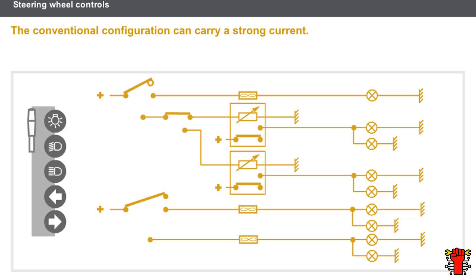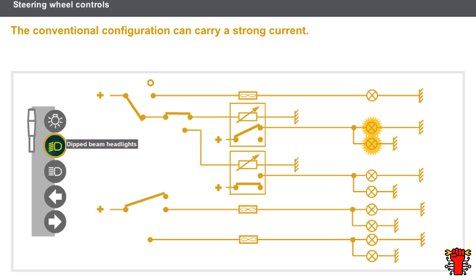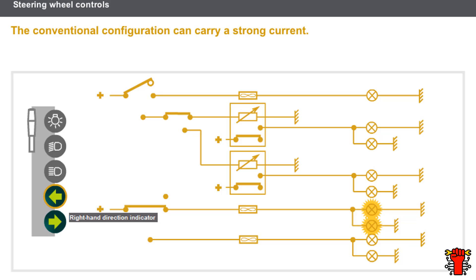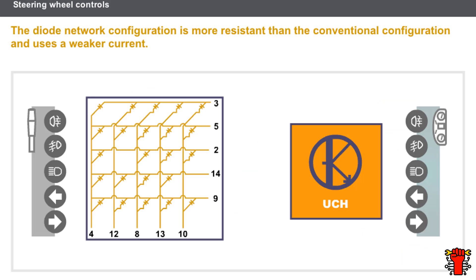Let's now see the electrical configuration of the controls or functions under the steering wheel. There are two types of electrical configuration for the steering wheel controls. The first is a conventional configuration using a wire and a switch. The strength of the current carried by this configuration depends on the strength required by the electrical consumers. This type of configuration is more susceptible to wear as it can carry a strong current.